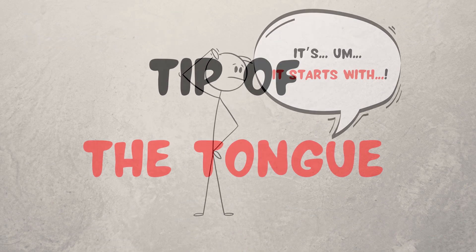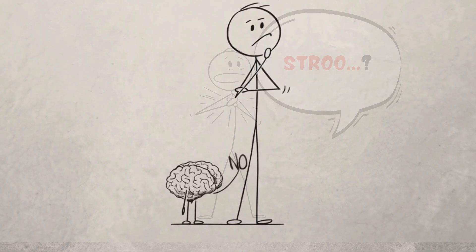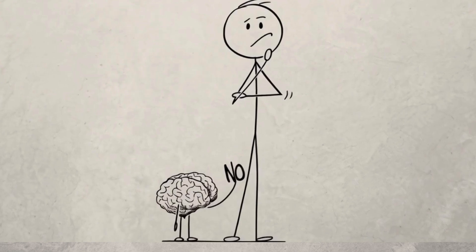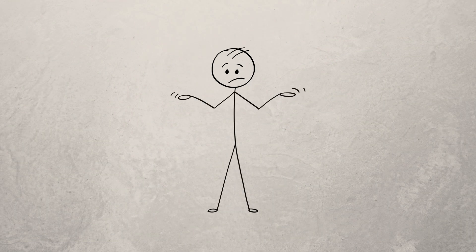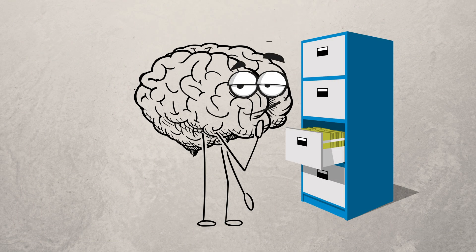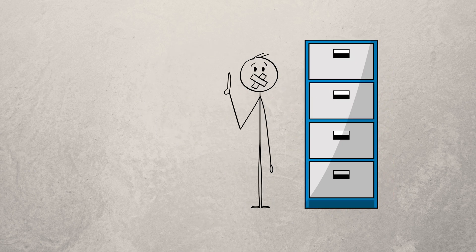Two, tip of the tongue. You know the word. You can feel it. But your brain's like, nah, I'm gonna leave you hanging. It's a retrieval hiccup. Your brain stored the word. Just not in the right drawer.